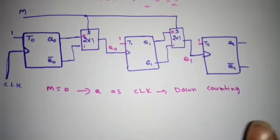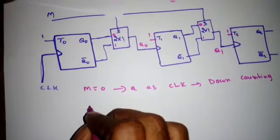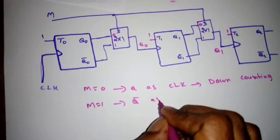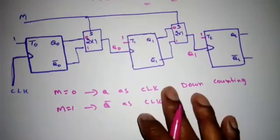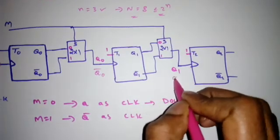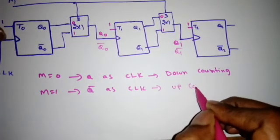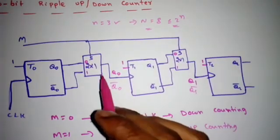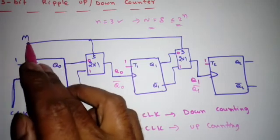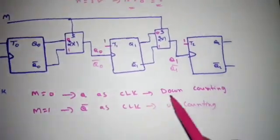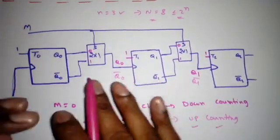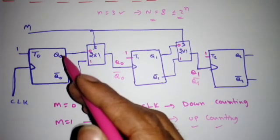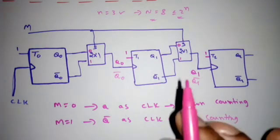When M=0, the MUX selects Q0 and Q1 as clocks for the subsequent flip-flops — positive edge trigger with Q as clock gives down counting. When M=1, the MUX selects Q0-bar and Q1-bar — positive edge trigger with Q-bar as clock gives up counting. So M=0 → down counting, M=1 → up counting. This same approach extends to 4-bit and larger ripple up-down counters using either T or JK flip-flops with positive or negative edge triggering.